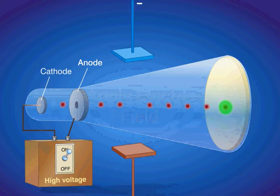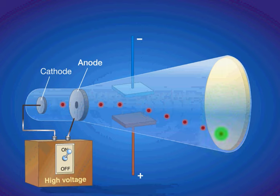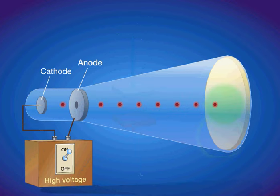When an electric field is applied across the cathode ray tube, the cathode ray is attracted by the plate bearing positive charges. Therefore, a cathode ray must consist of negatively charged particles. We know these negatively charged particles as electrons.